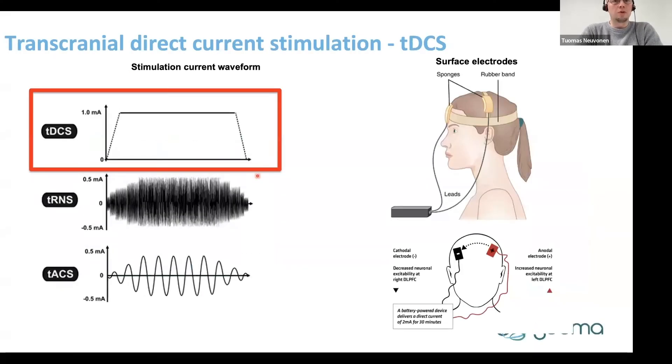So let's get to the main topic. What is transcranial direct current stimulation, or tDCS? tDCS is a weak electrical stimulation of the brain. Often the devices are portable, battery-powered devices.